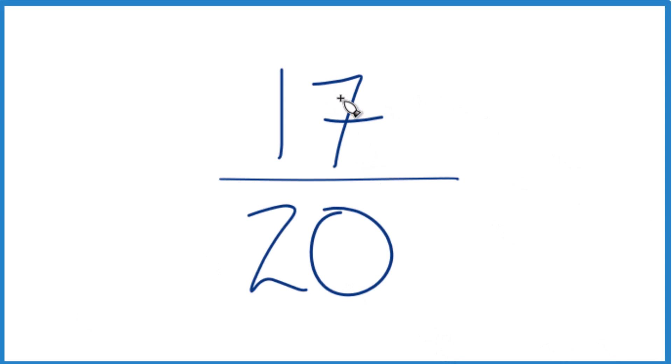All right, let's see if we can figure out what 17 20ths, that's 17 over 20, is as a decimal. So what is 17 divided by 20? We know that 17 is smaller than 20, so our answer will be less than 1.